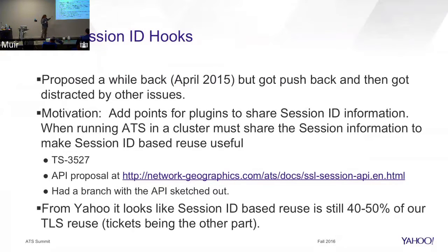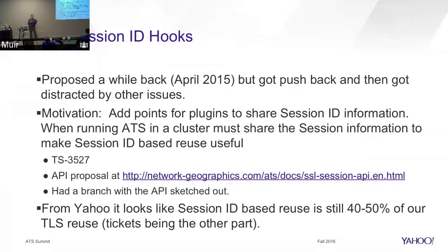If you have just one box, the implementation works great — you can use core OpenSSL or the ATS implementation, which performs better (done by Brian at LinkedIn). But if you have more than one box in a cluster, that doesn't really work. Tickets are easy — you just copy your ticket key around. But with session IDs, if you have 10 ATS boxes behind a load balancer, a client that negotiates with box one and tries to resume on box two won't be able to, unless those boxes are communicating. So for any sizable cluster, session ID reuse is limited.